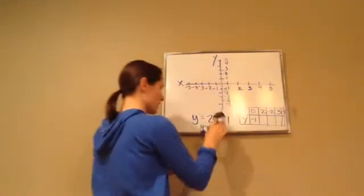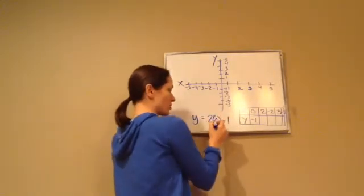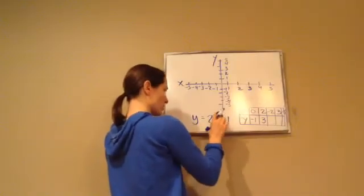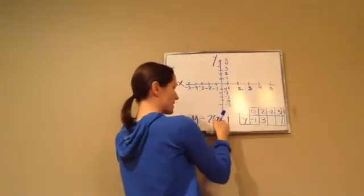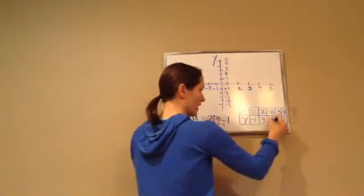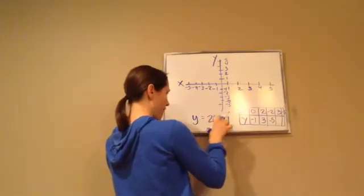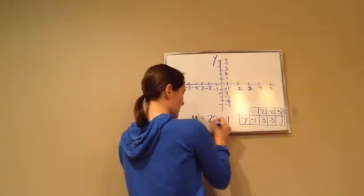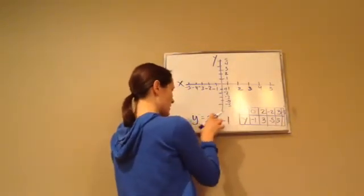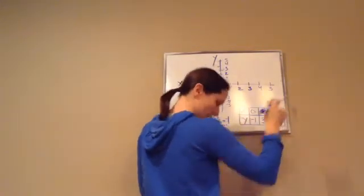When x is 0, y is negative 1. Next, if x is 2: 2 times 2 is 4, and 4 minus 1 is 3, so y equals 3. For x equals negative 2: negative 2 times 2 is negative 4, plus a negative 1 makes negative 5, so y equals negative 5. For positive 3: 3 times 2 is 6, minus 1 is 5, so y equals positive 5. And for negative 3: negative 3 times 2 is negative 6, plus negative 1 makes negative 7, so y equals negative 7.